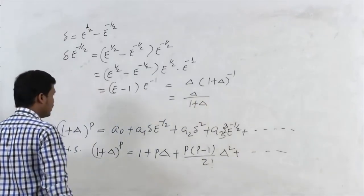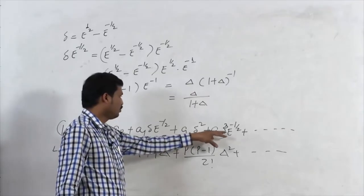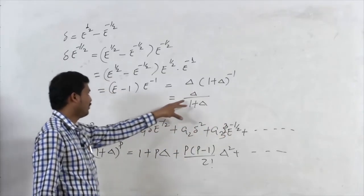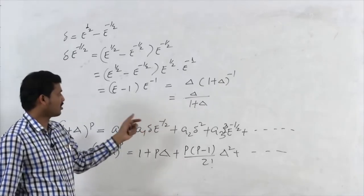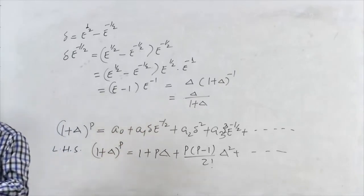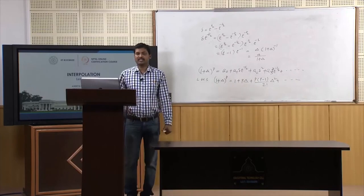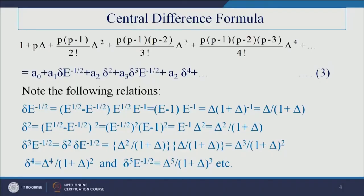Similarly, δ³·E^(−½) and other odd terms can be expressed in terms of capital Δ. The key relations are: Δ² expressed as Δ²/(1 + Δ); Δ³ as Δ³/(1 + Δ)²; Δ⁴ as Δ⁴/(1 + Δ)²; and Δ⁵·E^(−½) as Δ⁵/(1 + Δ)³.